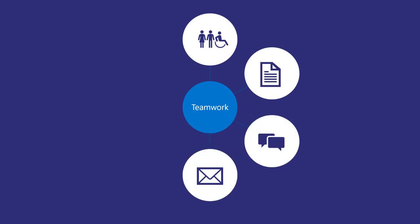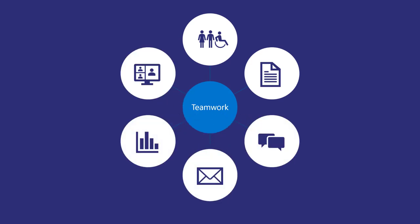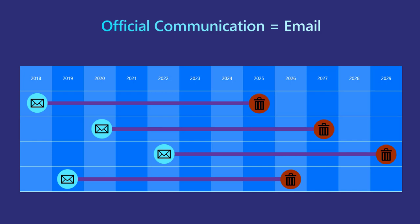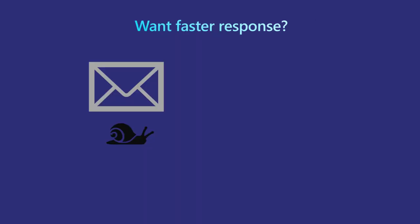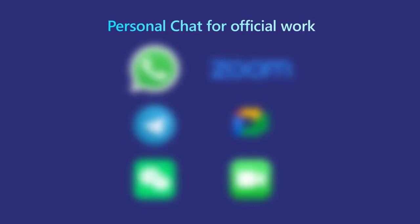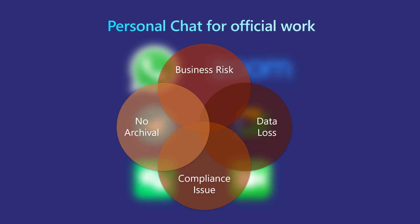Teamwork involves working with people, files, chat, email, data, and more. Generally when we want official communication, we say put it on email. Why? Because email is archived for three to seven years, depending on the regulations in each country. The problem with email is that it is slow, so if you need a fast response, we generally use chat. But if you put official information, data, and files on personal chat applications, that is also risky — there is no archive, and it's a compliance issue.